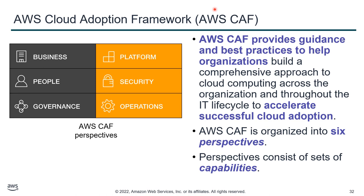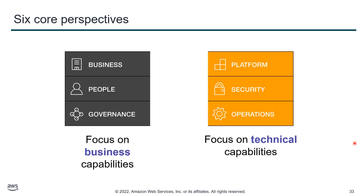The CAF defines six areas of perspective covering people, processes, and technology. Each perspective consists of a set of capabilities. In general, the business, people, and governance perspectives focus on business capabilities, while the platform, security, and operations perspectives focus on technical capabilities. There are two main viewpoints: the core business perspective for organizations using IT, and the technology perspective. The business perspective identifies the people at the top of management and how they can use cloud.